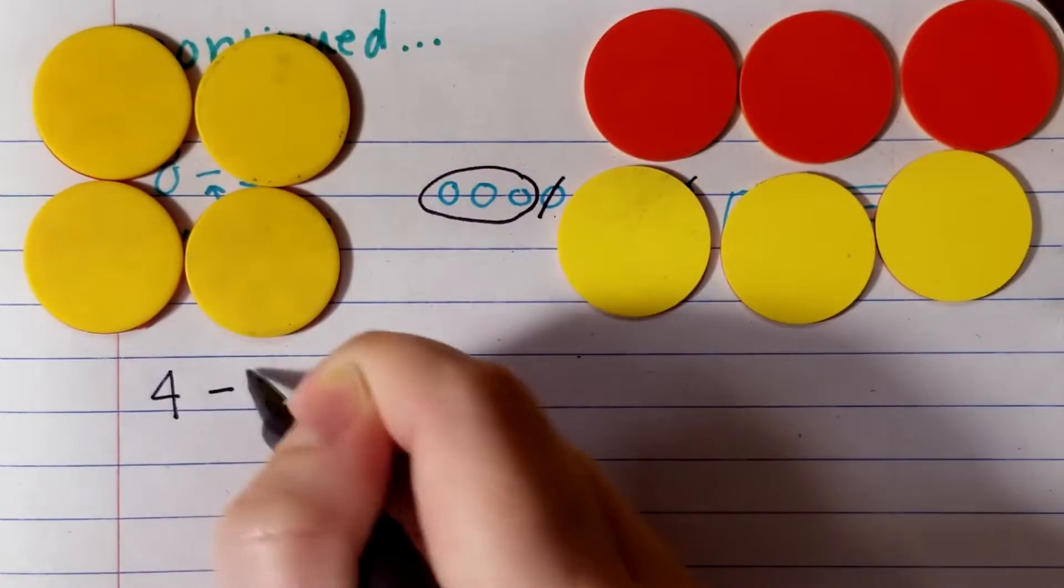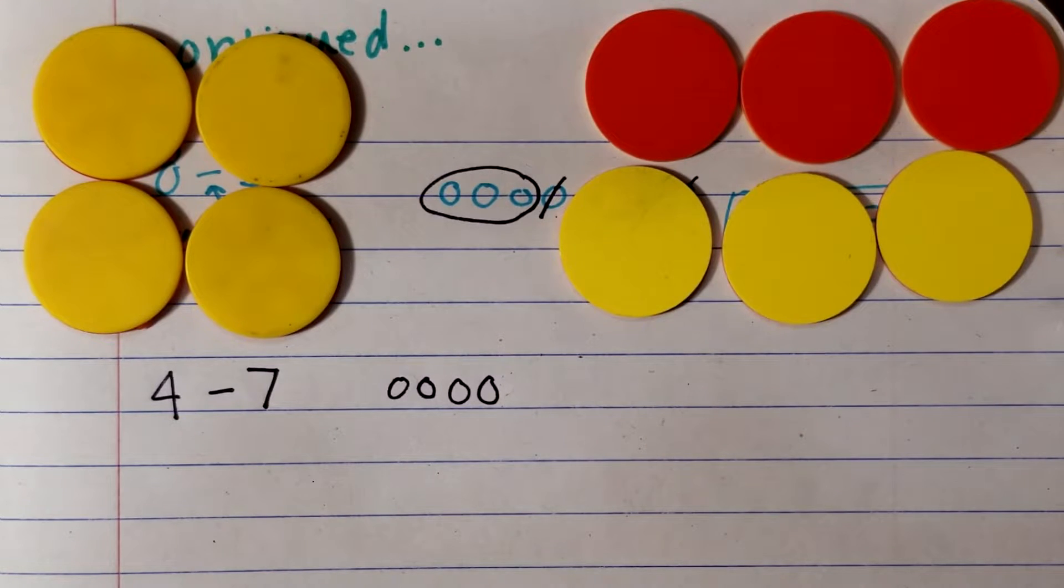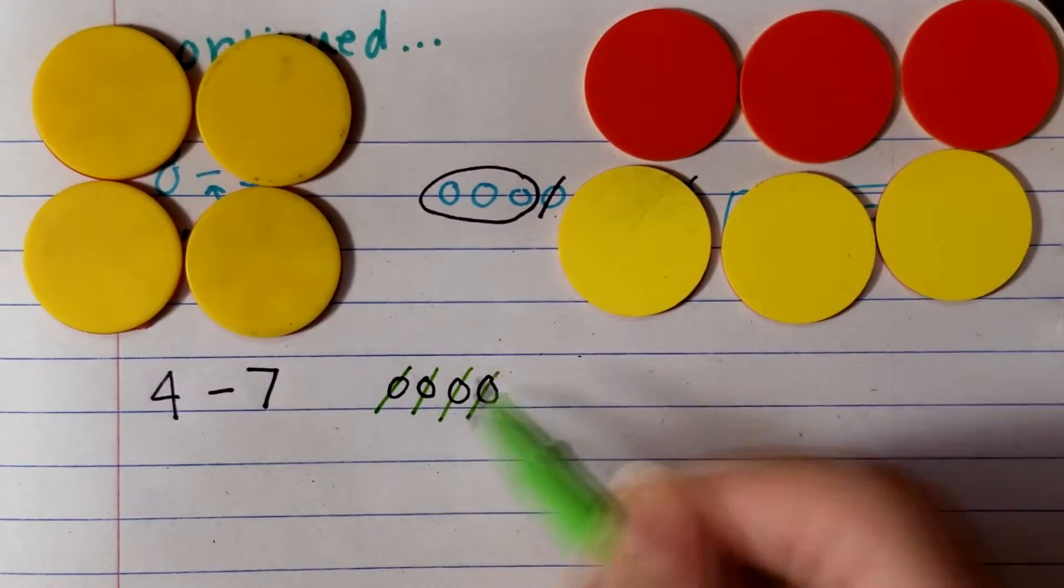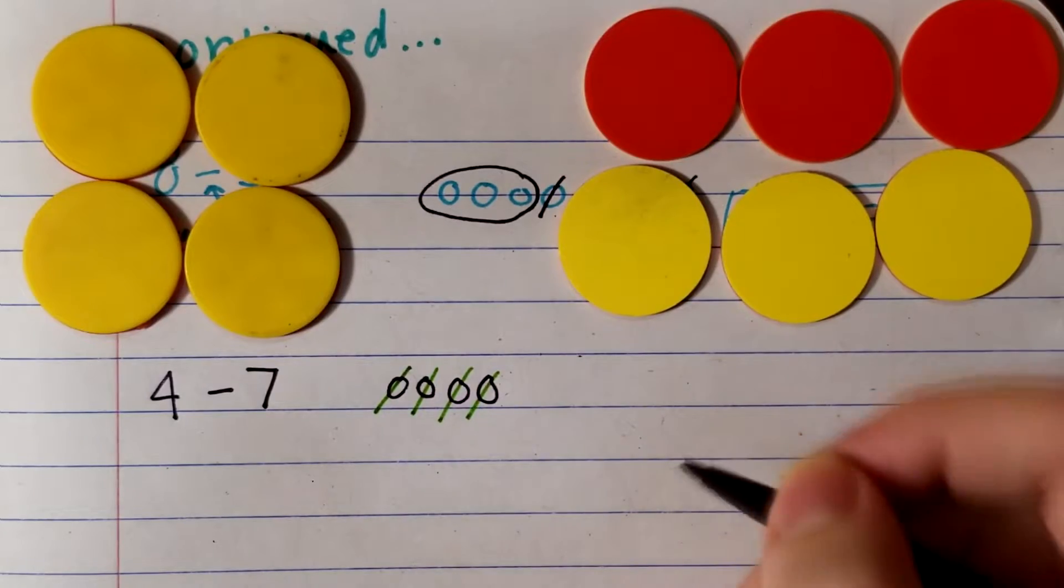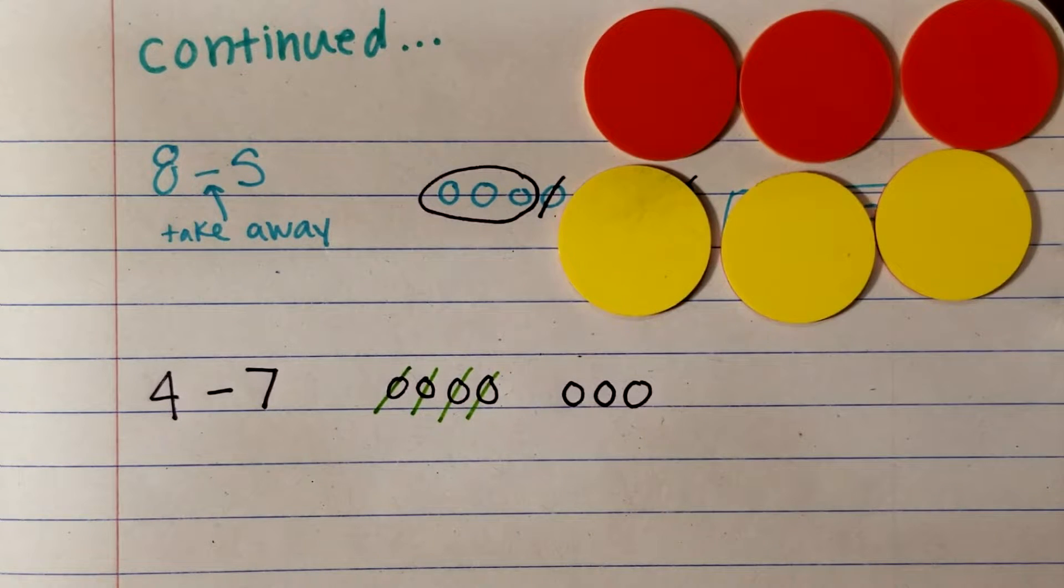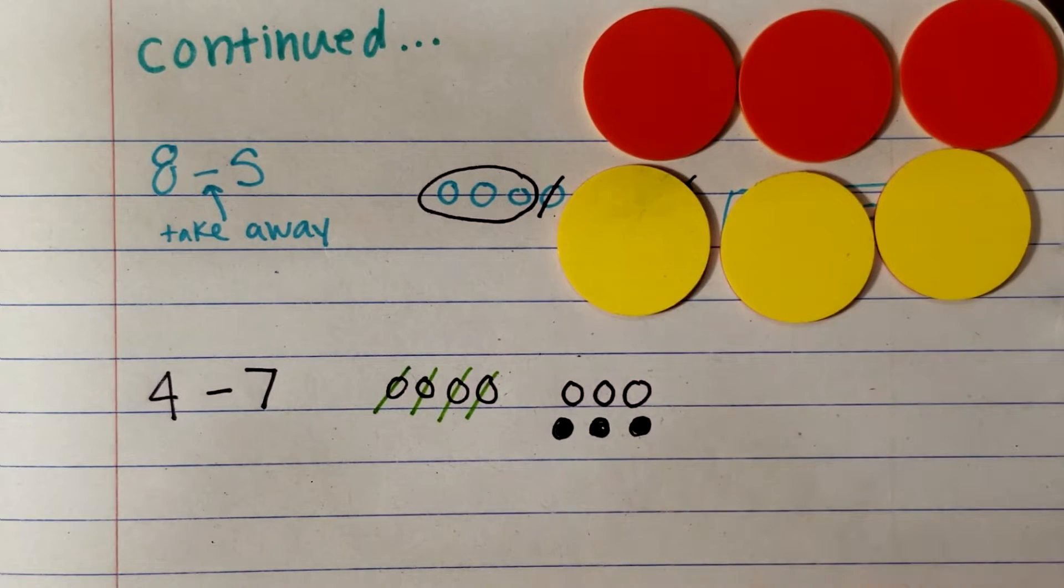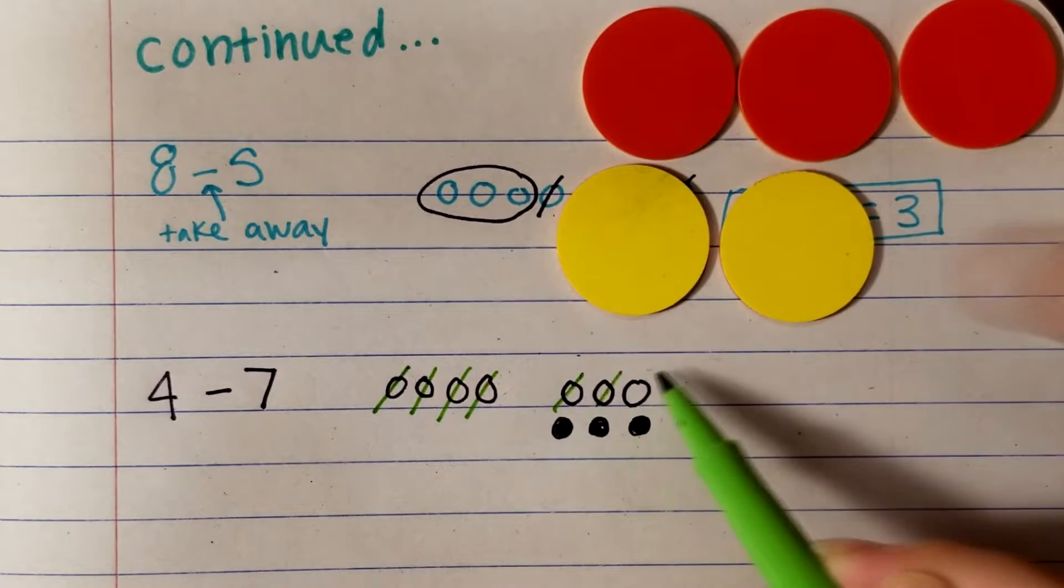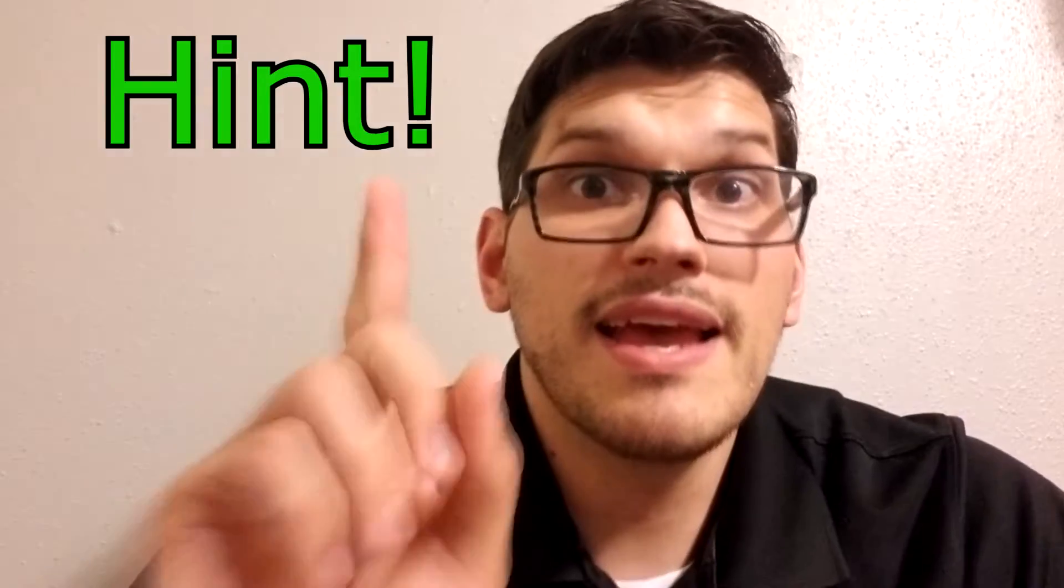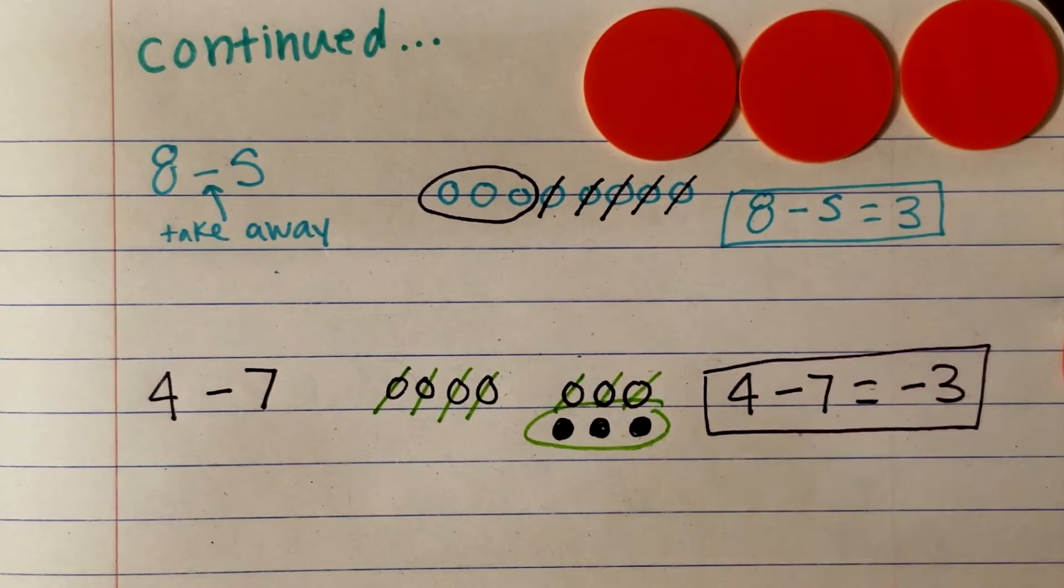Now try four minus seven. I have four, but I need to take away seven. I see the four that I can take away. But what about the rest? We can use zero pairs. If I have four and I'm taking away seven, I still need to take three more away. Bring in zero pairs. Now I can take away the three that I didn't have before. And I am left with three negatives. Hint. If I am taking away more than I have, the answer will be negative.